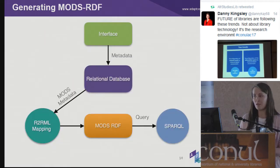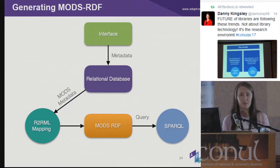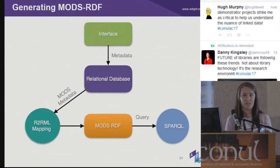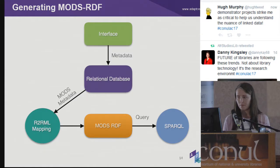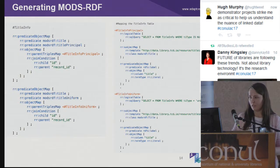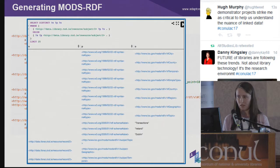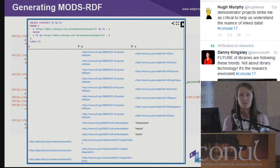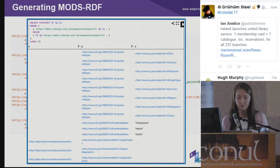In terms of generating the MODS RDF, data entered into the interface is saved to a relational database. We then used an R2RML mapping to take the information from the relational database and publish it as MODS RDF. R2RML is a W3C recommendation for declaring mappings from relational databases to RDF datasets. Using these mappings, RDF records were generated. Here's an example of the R2RML mapping, and this is an example of the published MODS records. We were then able to run SPARQL queries over the MODS RDF.